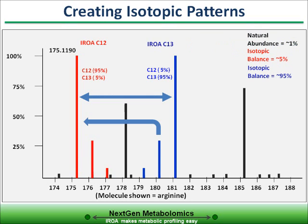So if we put them all together, we can see that these three peak classes — natural abundance, 5%, and 95% — can be easily distinguished. This means that the software algorithms can go through and identify if a peak contains natural abundance, 5%, or 95% carbon.